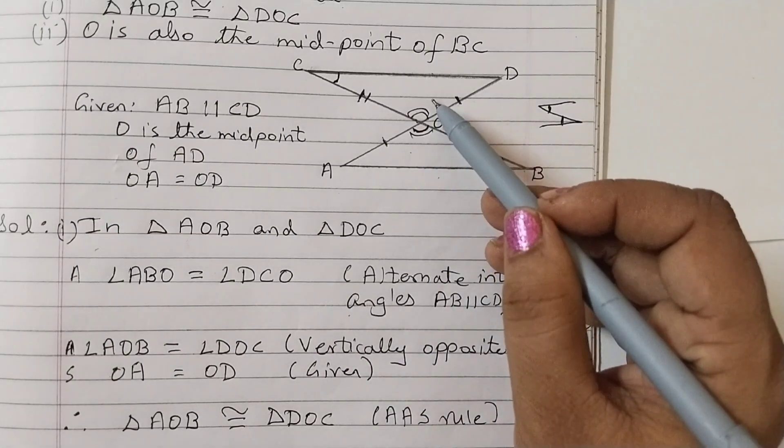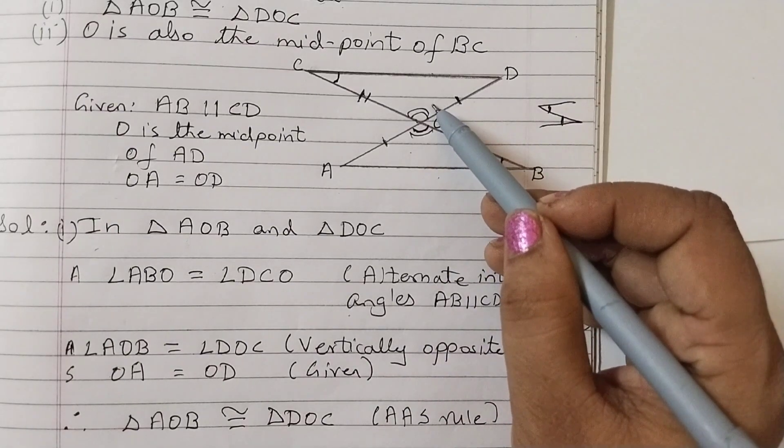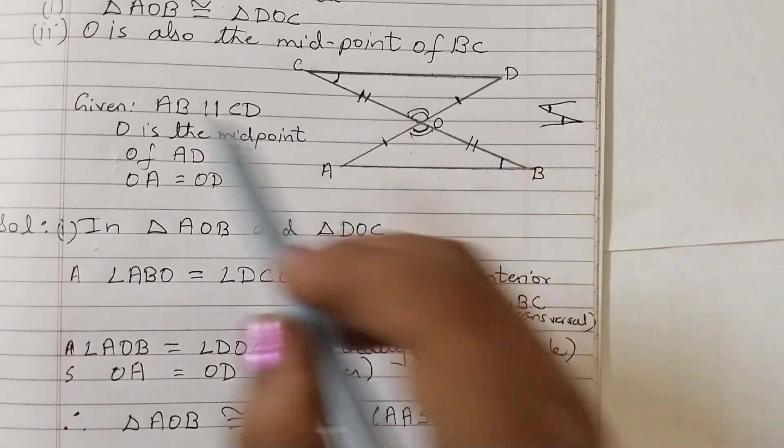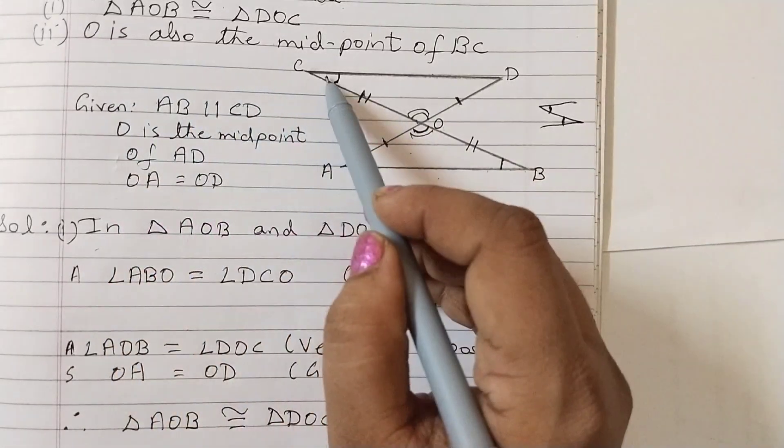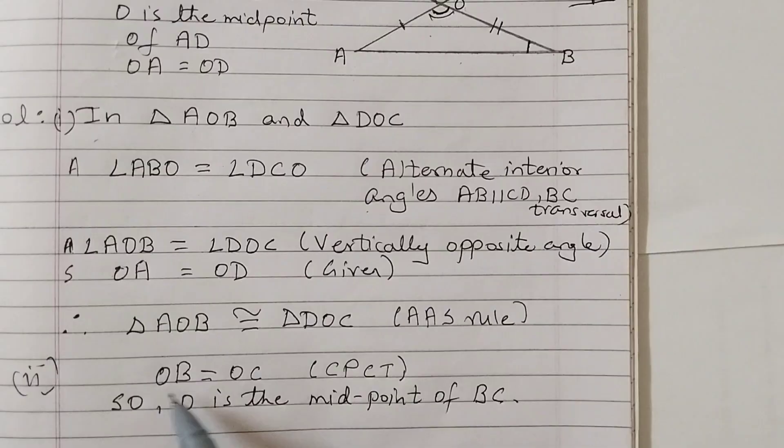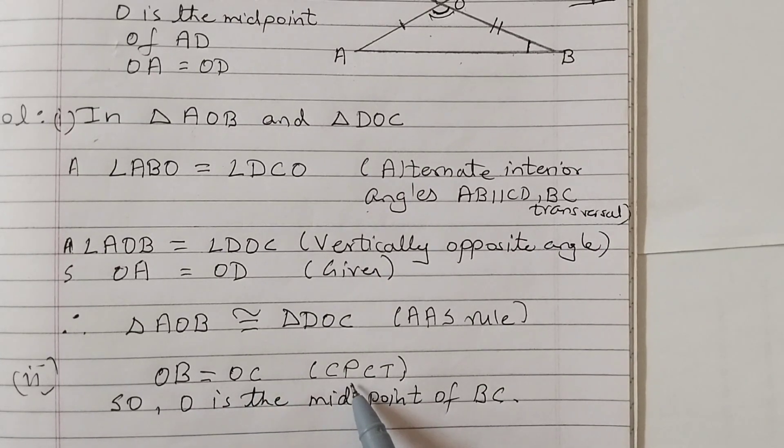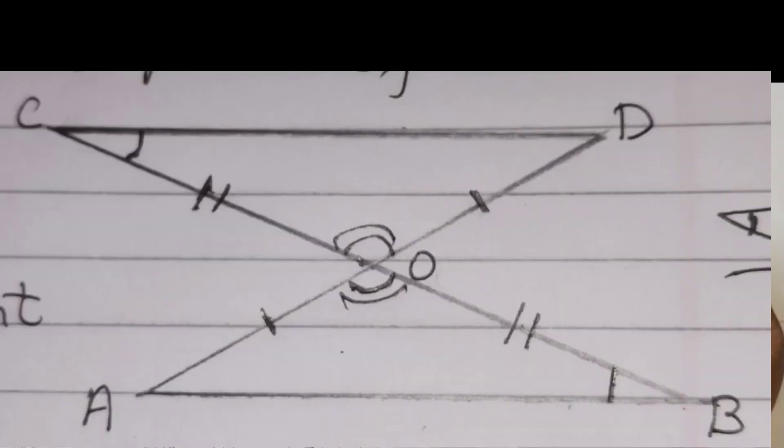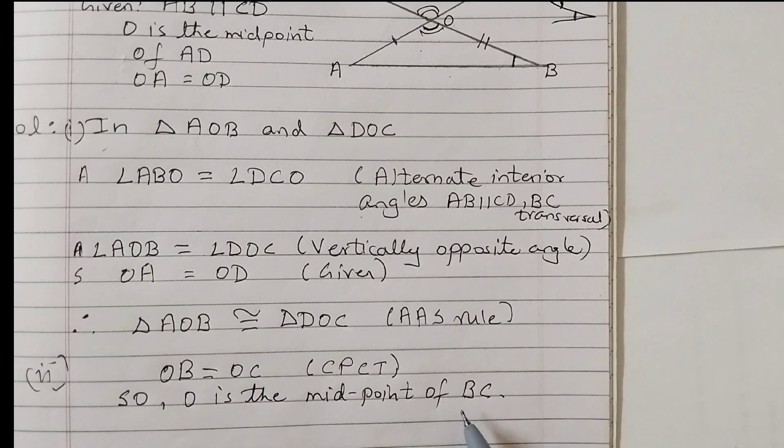Now these two triangles are congruent, that we have proved. Coming to the next part, O is also the midpoint of BC. OB is equal to OC, that is according to CPCT. That is corresponding parts of congruent triangles are always equal. Therefore, the corresponding parts OB is equal to OC. So, O is the midpoint of BC.